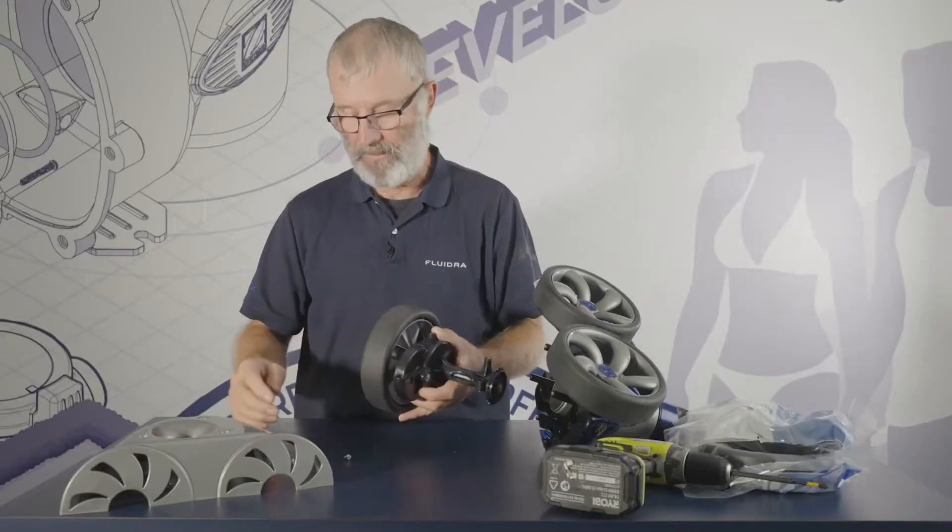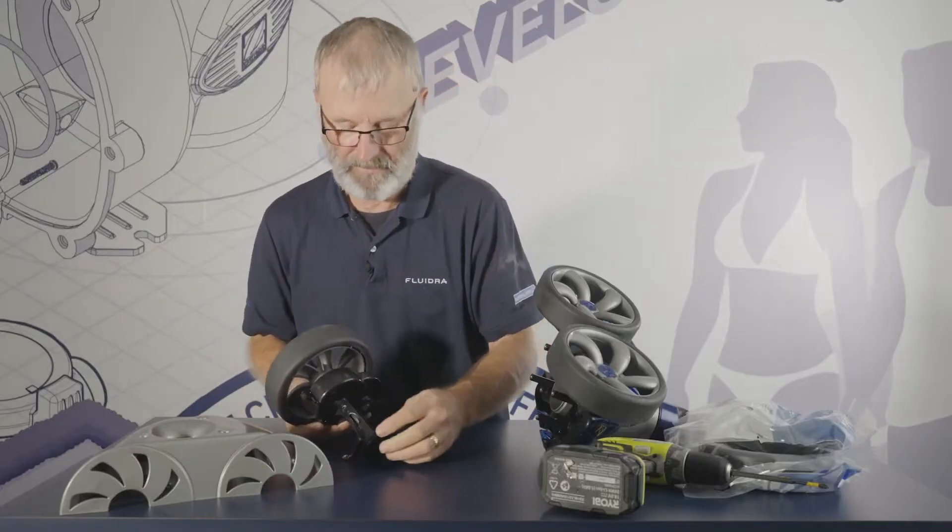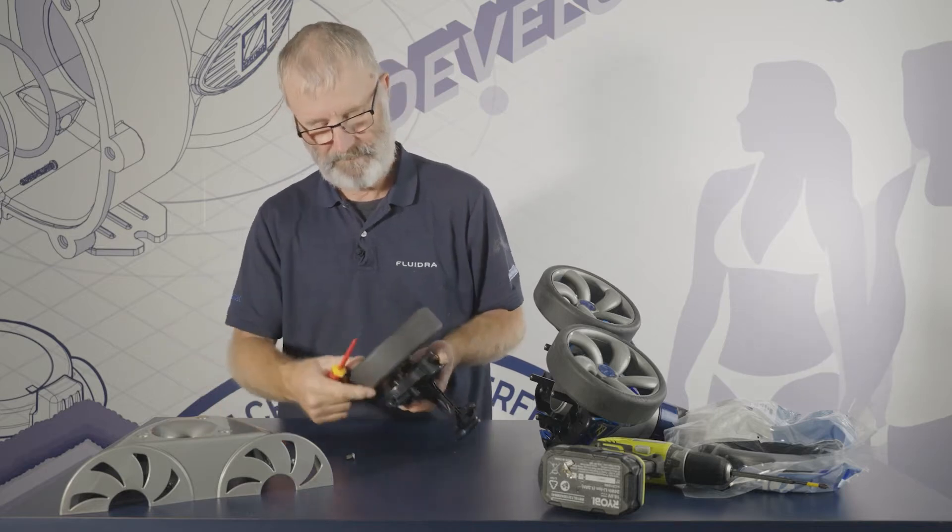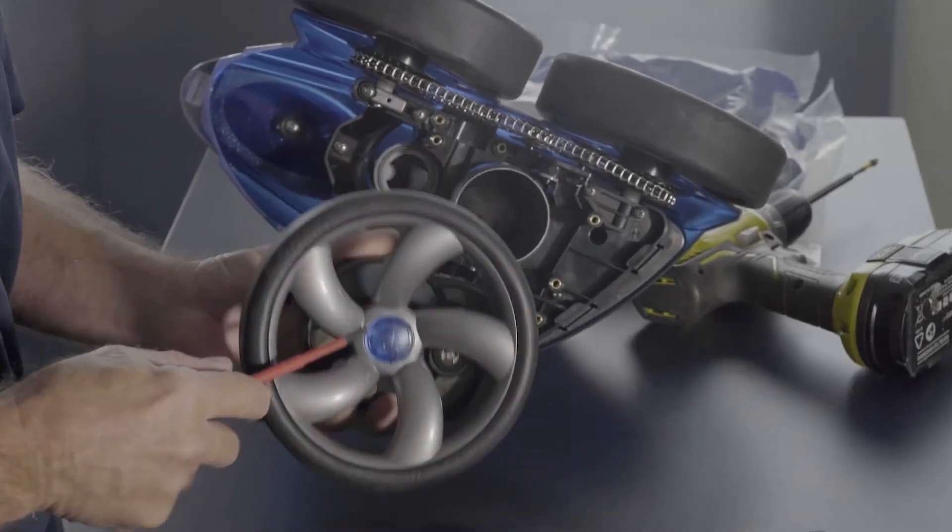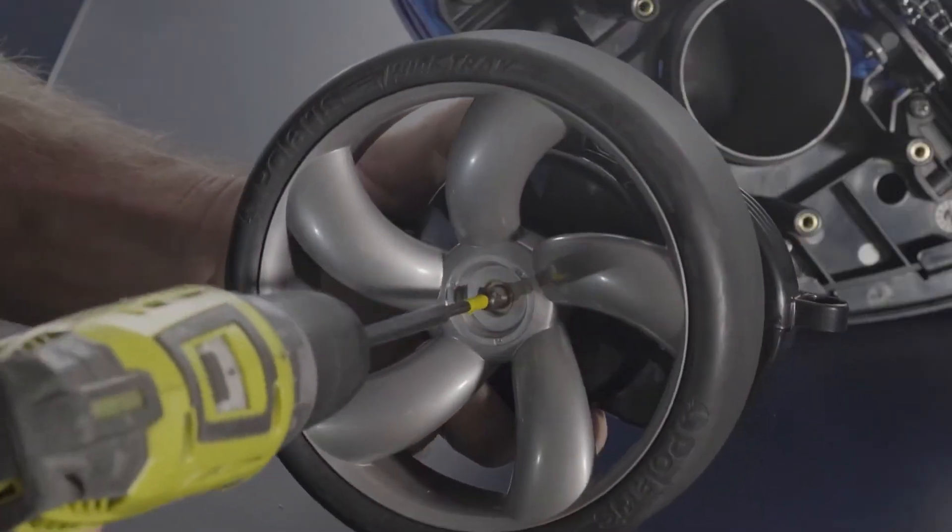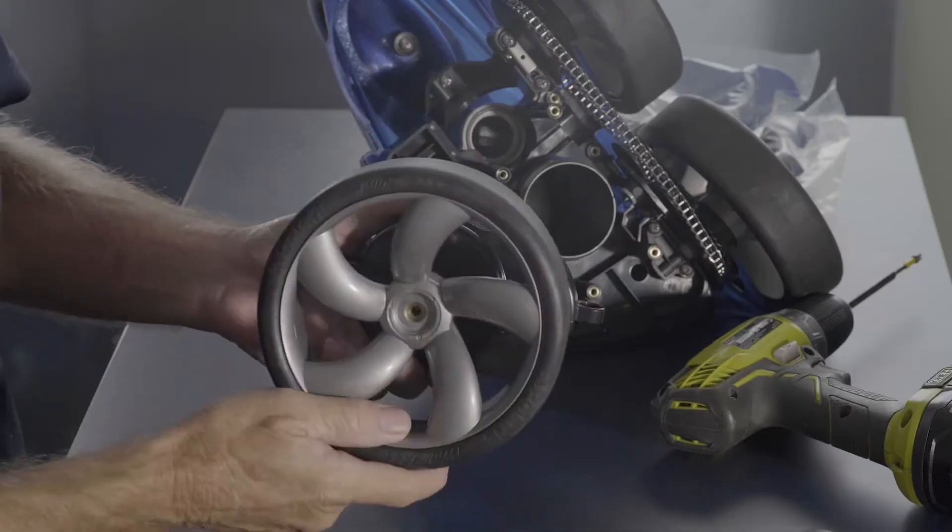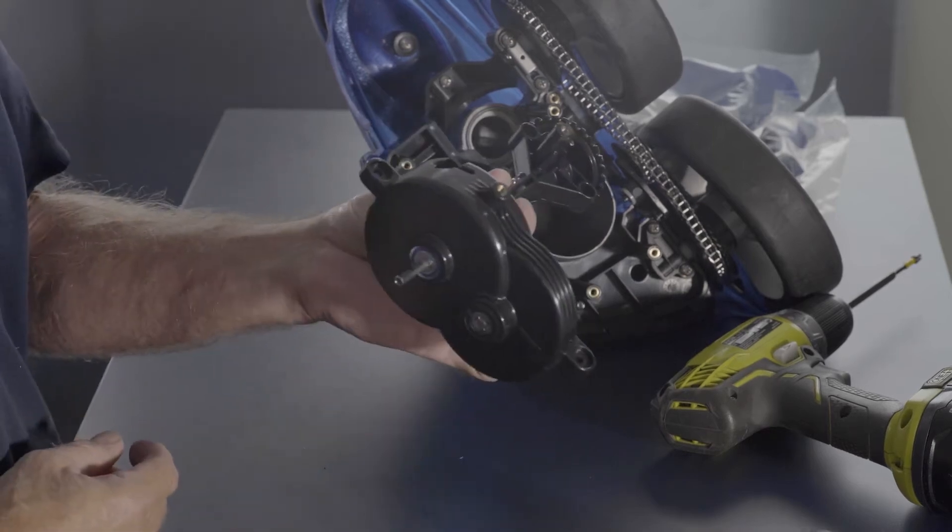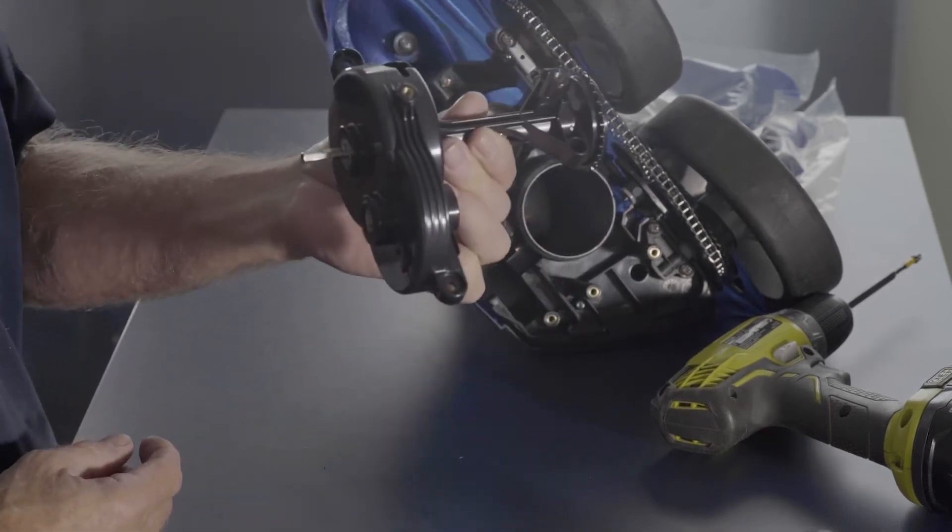And the gearbox will consist of, let's get rid of those two screws. If you take the wheel off. There's a screw in the center there. And that wheel just pops off. That's the whole gearbox. So if you need to change it, that's what you change.